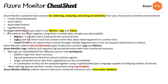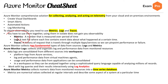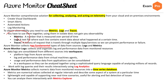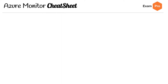Azure Monitor Metrics is the second fundamental type. It collects numeric data from monitored resources in a time series database. Metrics are numerical values collected at regular intervals and describe some aspects of a system at a particular time. They are lightweight and capable of supporting near real-time scenarios, useful for alerting and fast detection of issues. You can analyze them interactively via the Metrics Explorer.